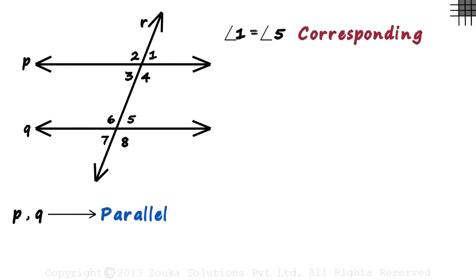Now let me ask you an interesting question. Look at the figure closely. Is this the only pair of corresponding angles? No, it isn't. We have three more pairs of corresponding angles. When a transversal intersects a pair of parallel lines, four pairs of corresponding angles are formed.